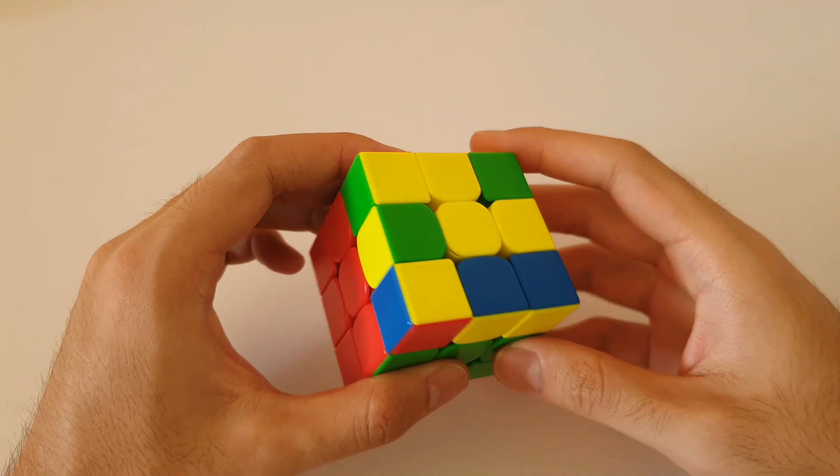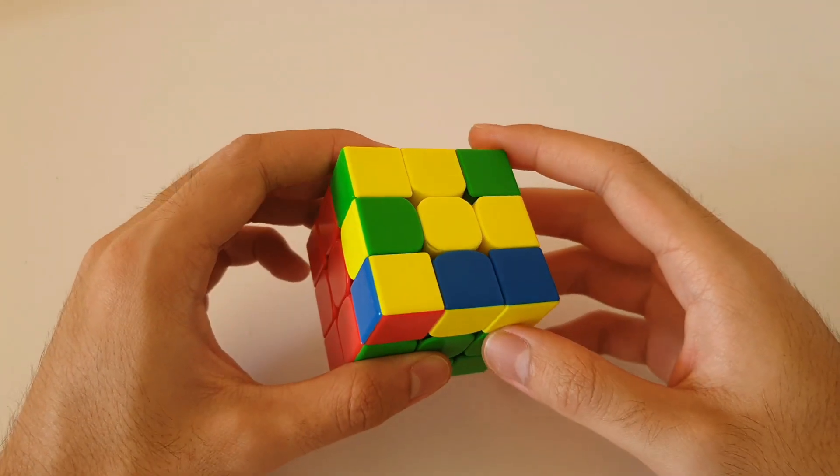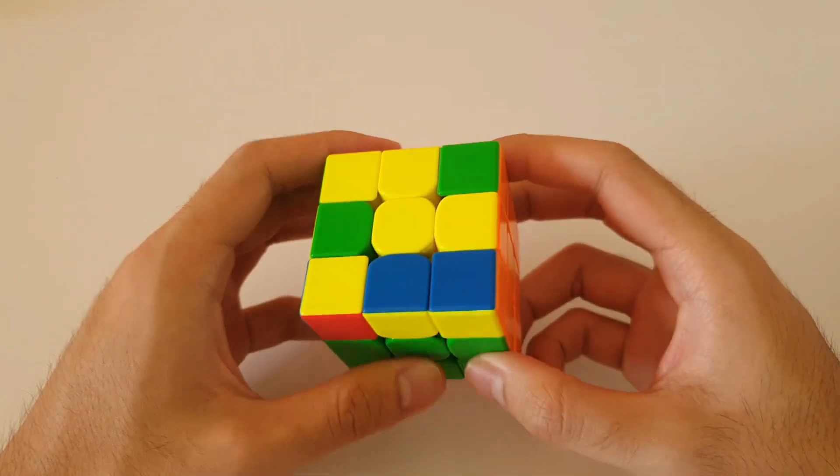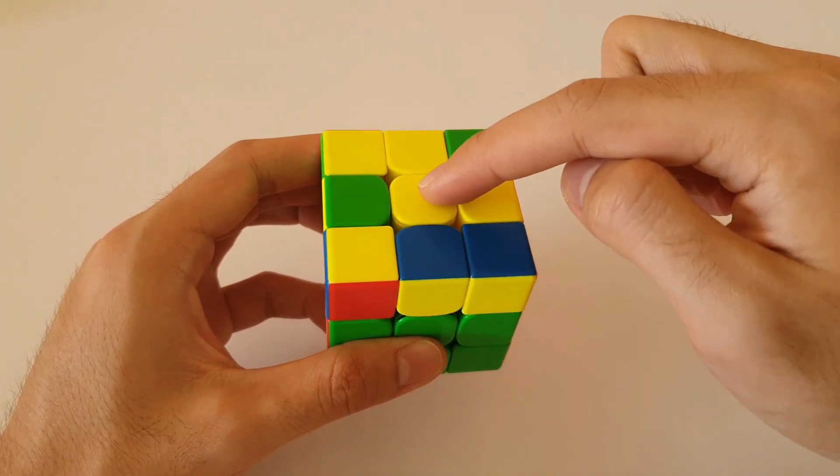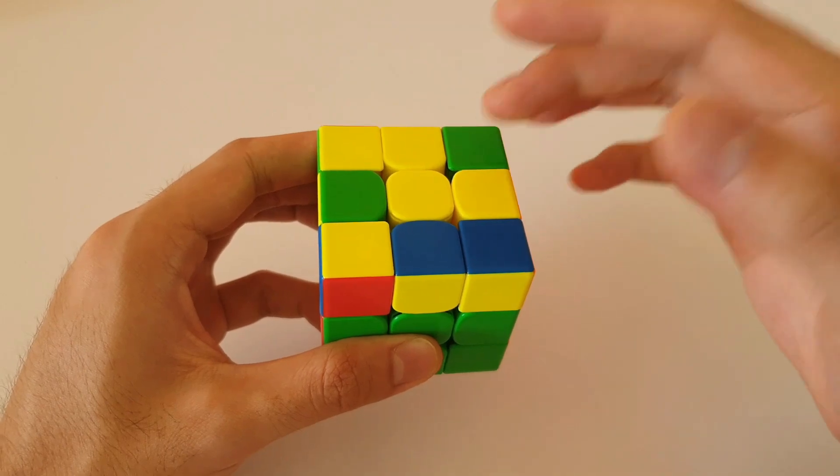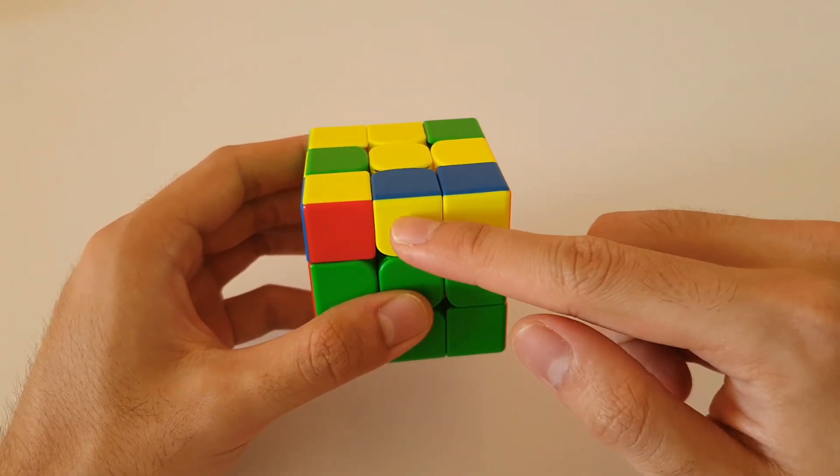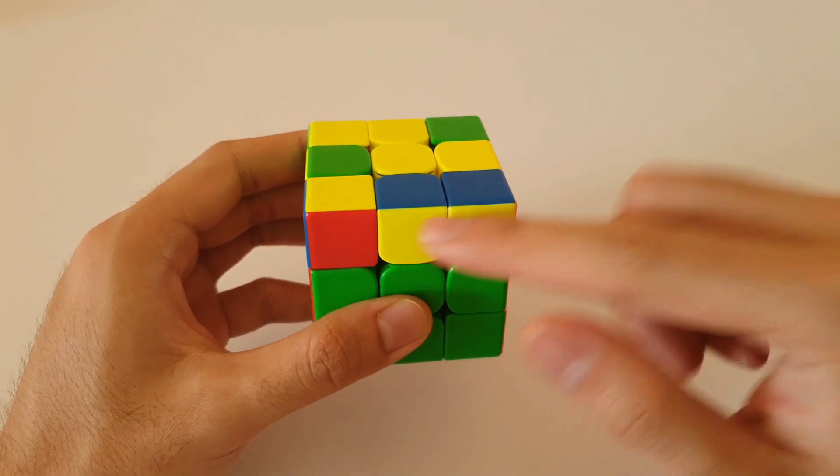All right guys, so final awkward shape case, which would be this one here. Once again, with these ones where there are no headlights, we want to make sure that the small lightning bolt portion of the case is near the back. So, or you can think of it as your 2x1 bar facing the front.